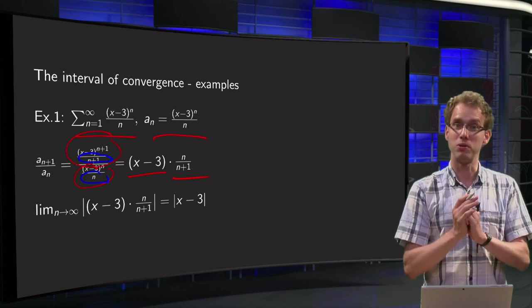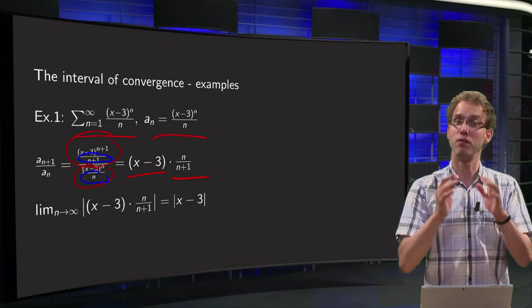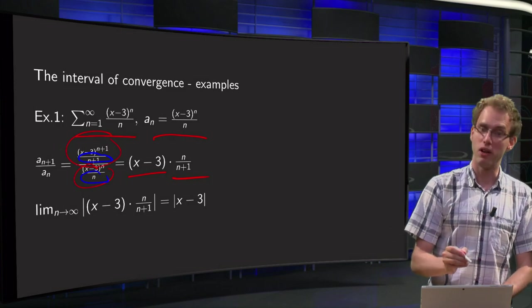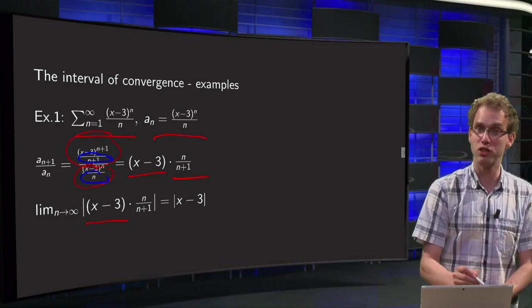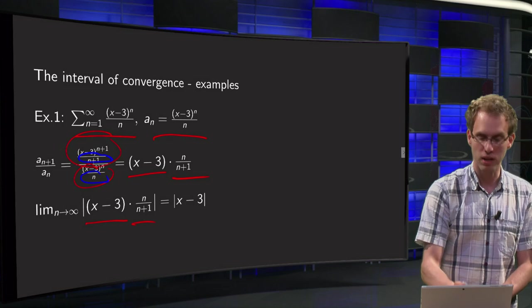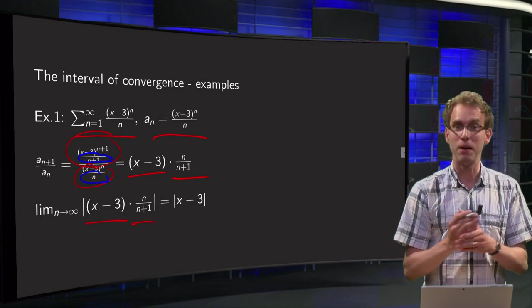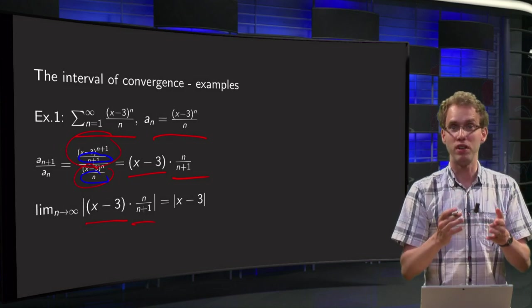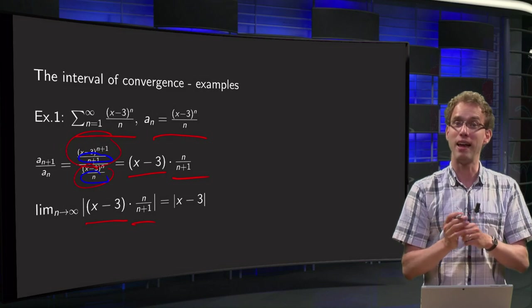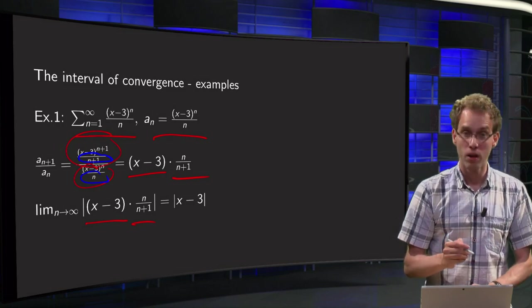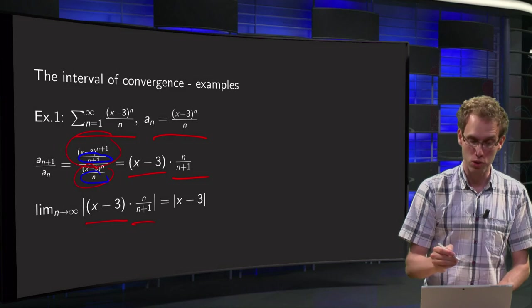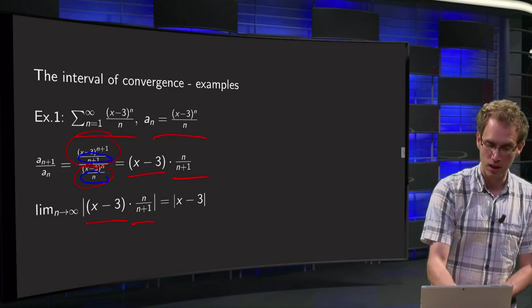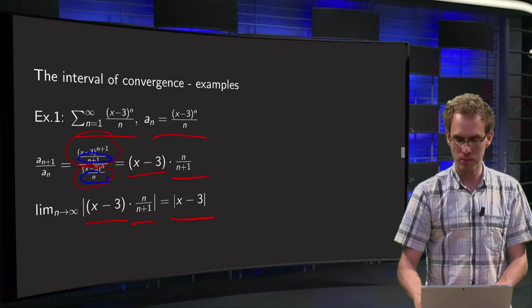Then we have to take the limit from n to infinity of the absolute value of this. Limit n to infinity of |x-3| times n/(n+1). But that limit is easy. If n goes to infinity you can divide by n and we get 1/(1+1/n), it goes to 1. So this limit equals |x-3|.